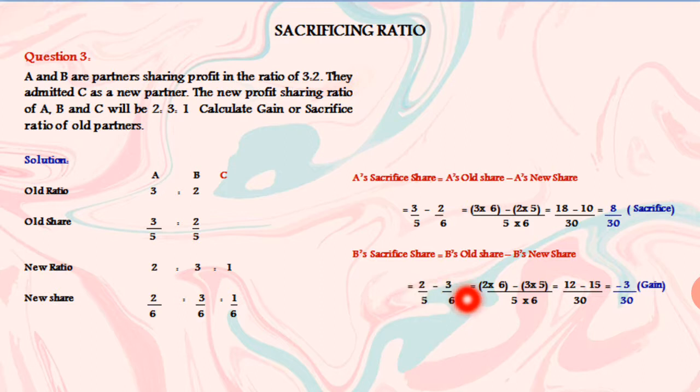2 times 6 minus 3 times 5 divided by 5 times 6. 6 and 2 is 12 minus 5 plus 3 is 15 divided by 5 plus 6 is 30. 12 minus 15 is minus 3 by 30.